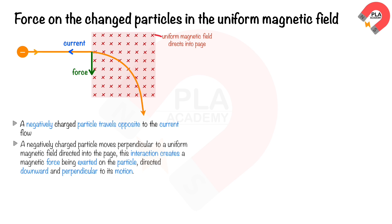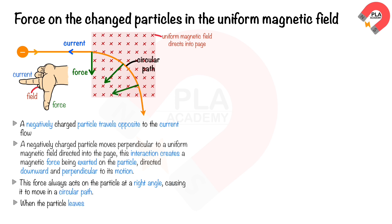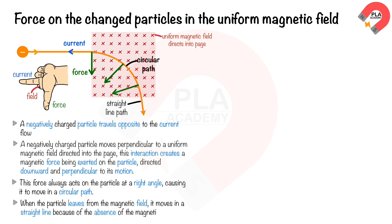Applying the Fleming left-hand rule, with your index finger pointing into the page along the magnetic field direction and your middle finger pointing to the left along the current direction, you see that your thumb points downward, indicating the direction of force acting on the negatively charged particle. This force always acts on the particle at a right angle, causing it to move in a circular path. When the negatively charged particle leaves the magnetic field, it moves in a straight line because of the absence of the magnetic force.